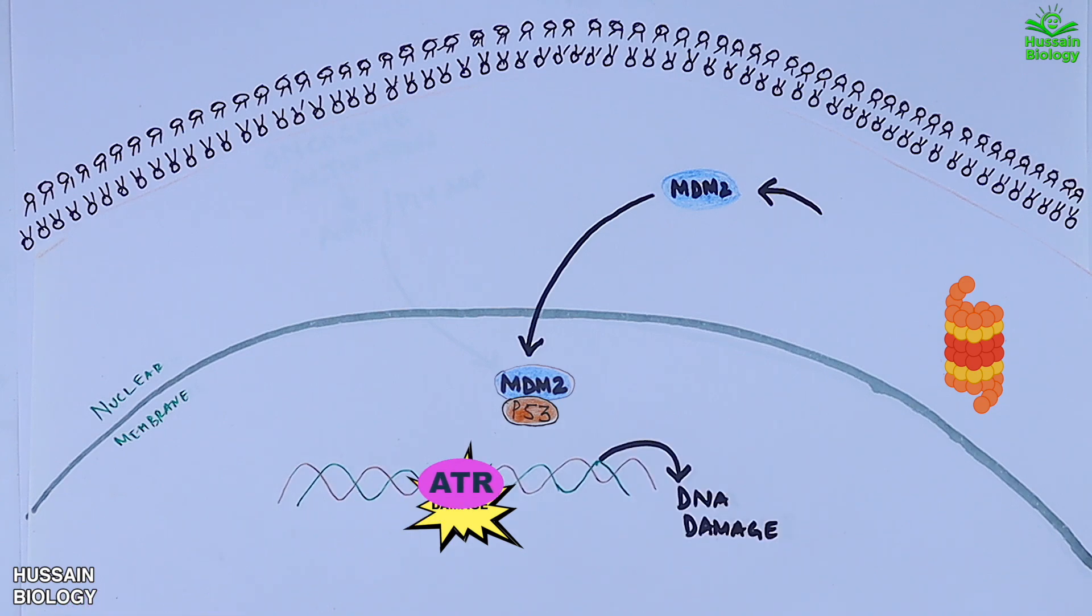This ATR then recruits and phosphorylates the CHK1 molecule, which in turn phosphorylates p53 at serine 20. The phosphorylation of p53 at serine 20 disrupts the p53-MDM2 interaction, and we are left with the stabilized p53 alone.